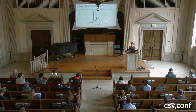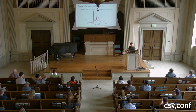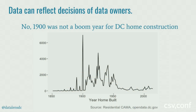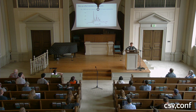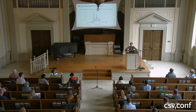Once data is collected, decisions are made about what to do with it, and you'll often find anomalies. This line chart shows when homes were built in Washington DC based on open data — 1900 looks like a huge boom year. But that's not what happened at all. When the city doesn't know the year a home was built but thinks it's pretty old, they just tag it as 1900. This is an anomaly entirely by design and not reflective of reality.